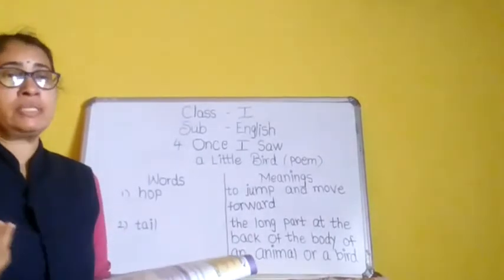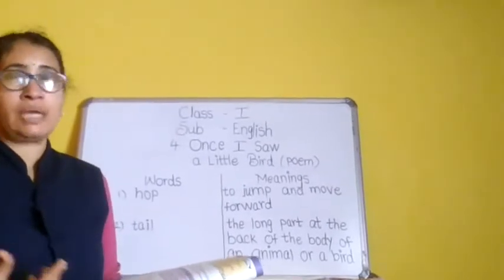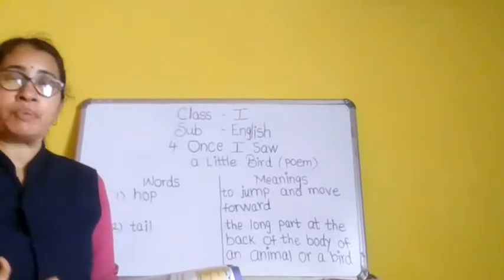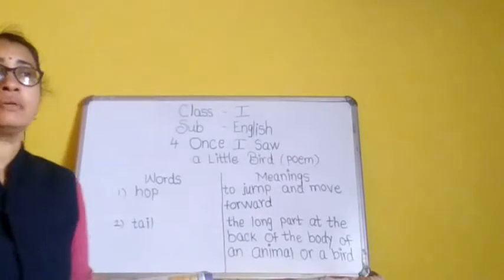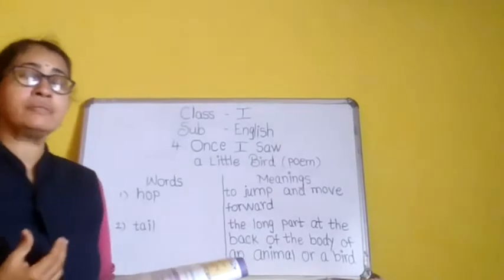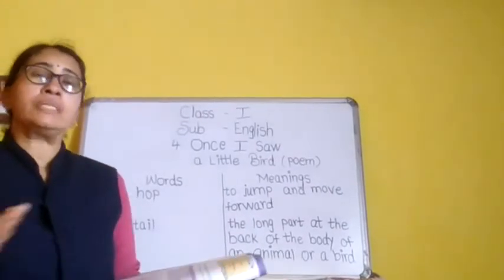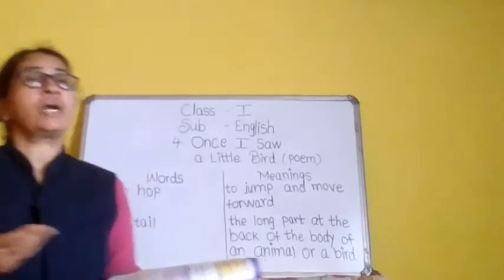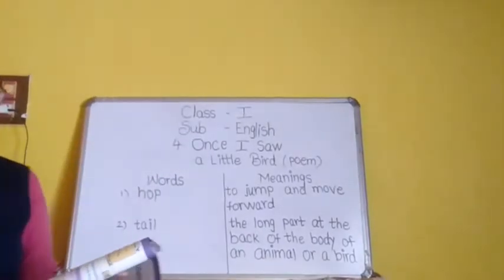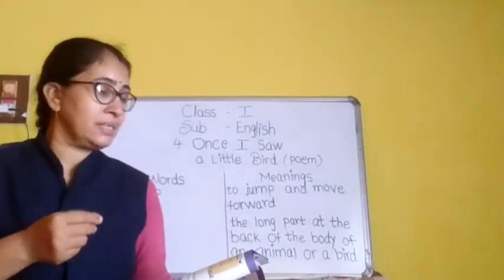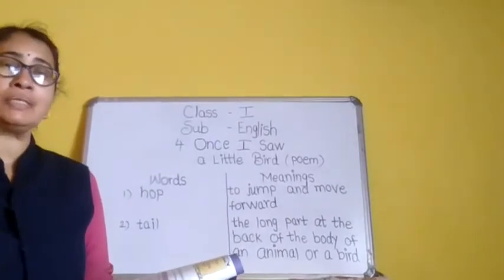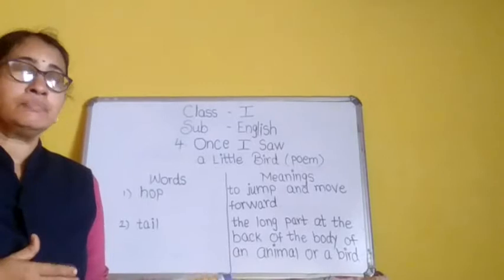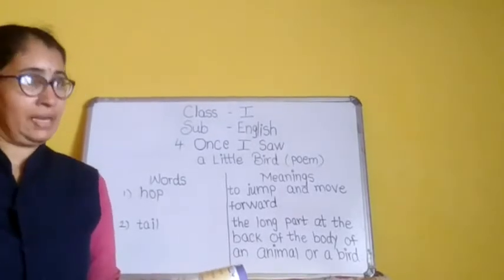We cut all the nets and threads and throw them in the dustbin properly. Whenever we work with threads or nets on the roof or anywhere else, we should collect all these after finishing our work. When that bird gets hurt or stuck, we can cut that net and make him free to fly.